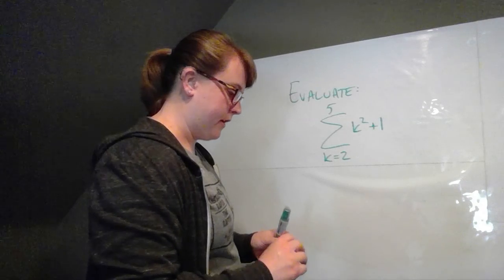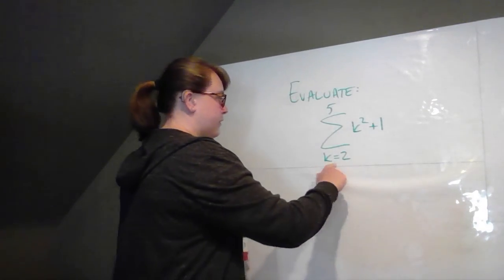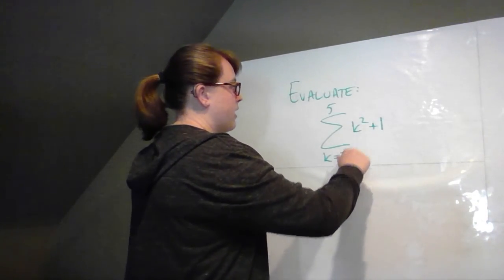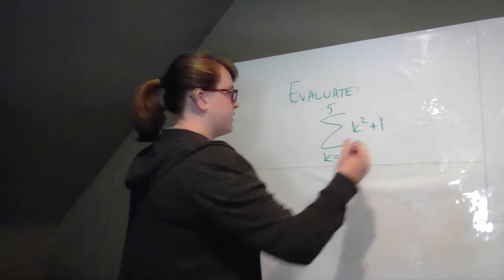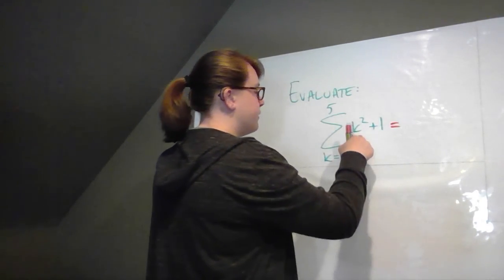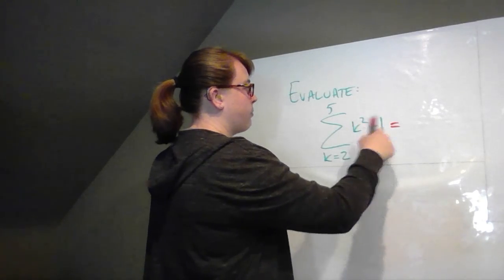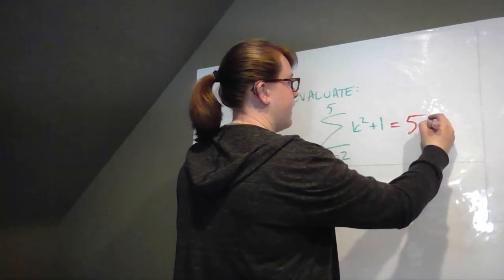So all we really have to do here is starting at this value k equals 2. We're going to start plugging in values for k and adding them all together. So first of all, if k is 2, 2 squared is 4, 4 plus 1 is 5, so my first term is 5.